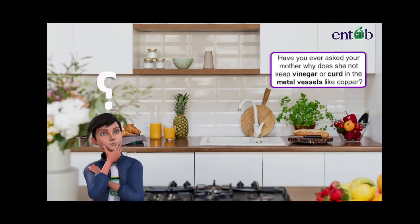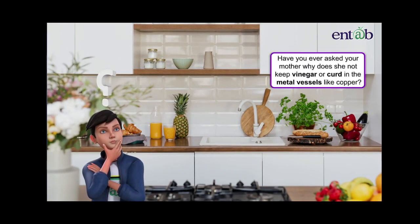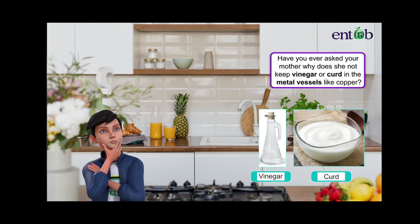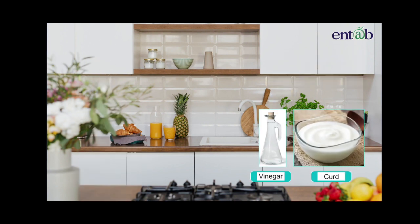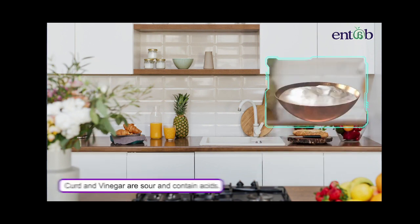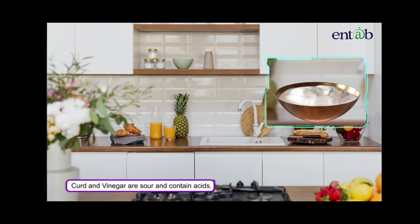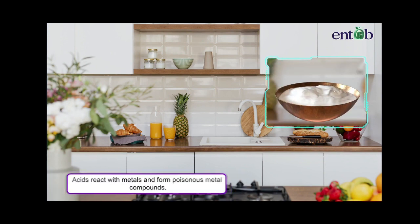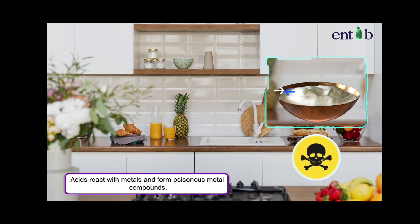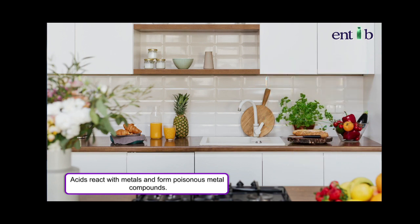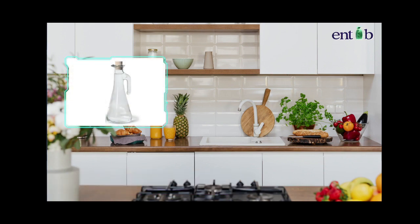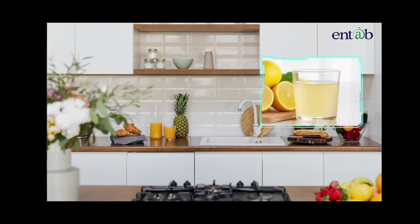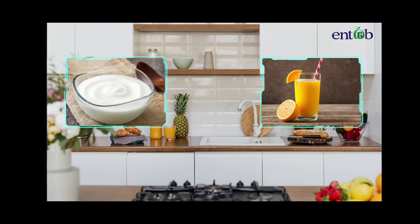Have you ever asked your mother why does she not keep vinegar or curd in metal vessels like copper? This is because these foodstuffs are sour and contain acids. So, when an acid reacts with metals, it forms poisonous metal compounds which are unfit for consumption. That's why people avoid keeping sour food items like vinegar, lemon juice, curd, and orange juice in metal vessels.